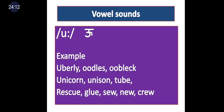Long U — /uː/ — uses the small-letter U with a colon in the slant bar. Examples: oodles, ooze, unicorn, unison, tube, rescue, glue, sue, new, crew. This is the long U sound, held slightly longer in pronunciation.